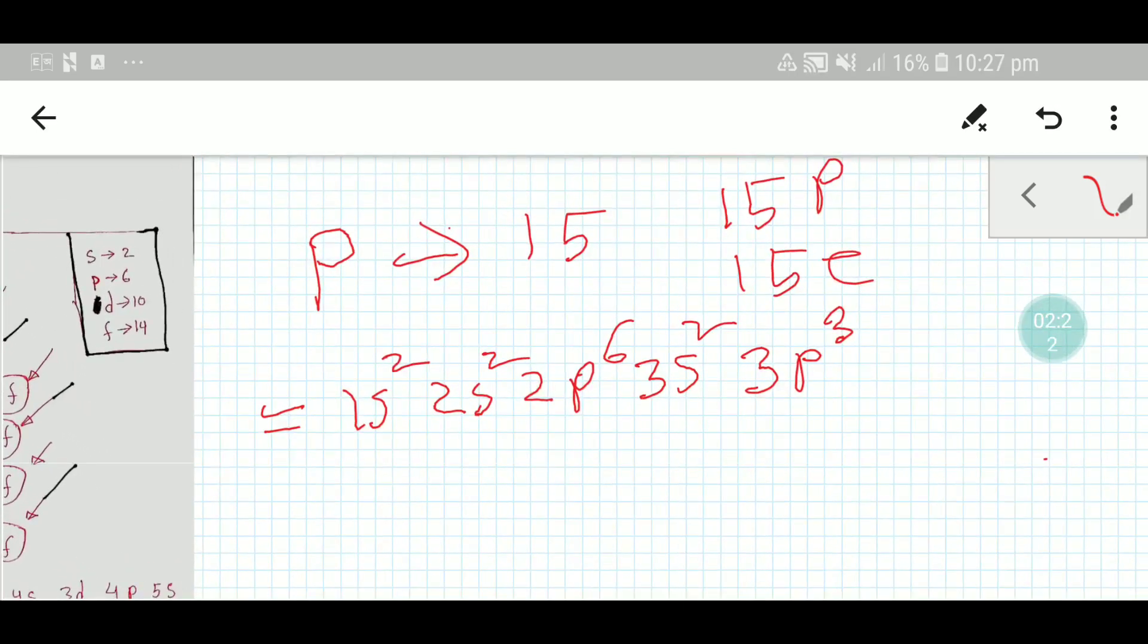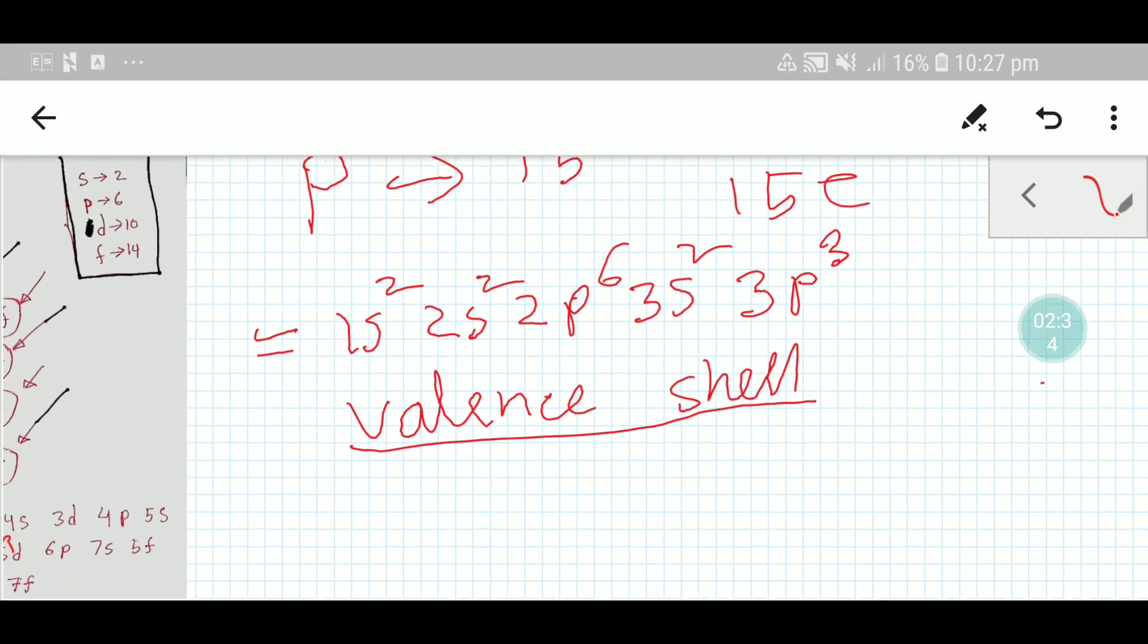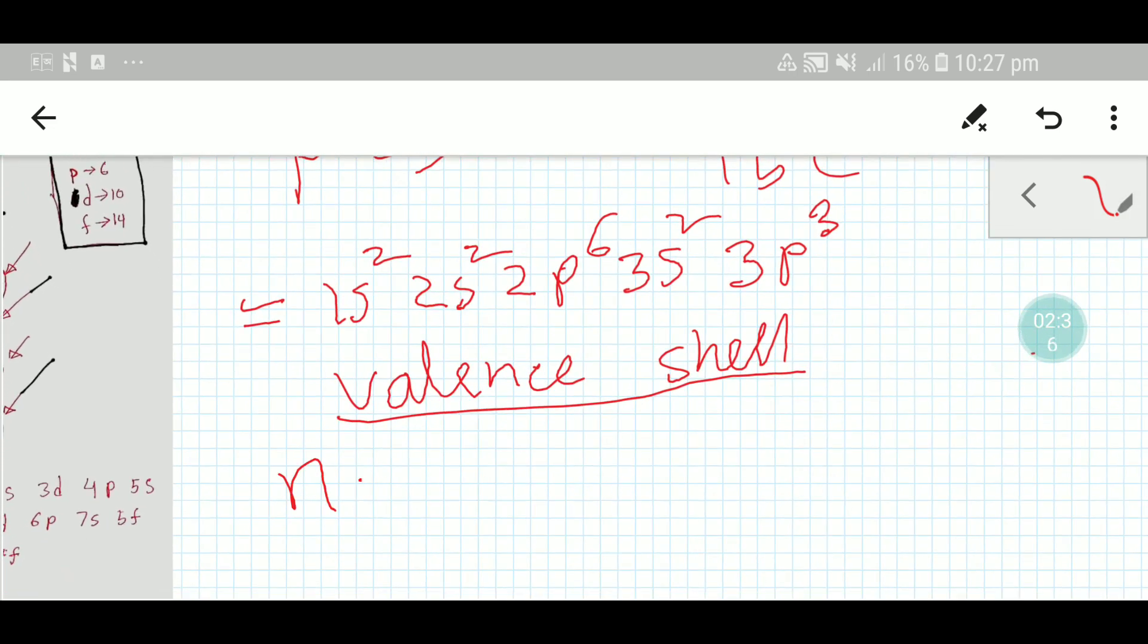So we have 15 electrons here. This is the electronic configuration of phosphorus. Now we have to find out the valency shell first, and to find out the valency shell, we have to look at the principal quantum number.